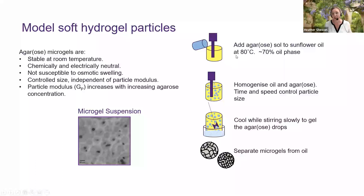I make these by adding agarose into sunflower oil, homogenizing it to form a water-in-oil emulsion where the agarose is in the water phase, then gelling those droplets simply by cooling them down. I can change the agar concentration to make softer or harder particles. The challenging part is separating the microgels from the oil phase, which can take significant time and a lot of centrifuging.